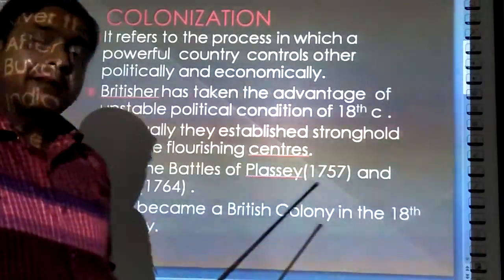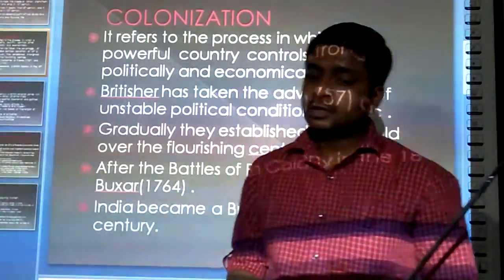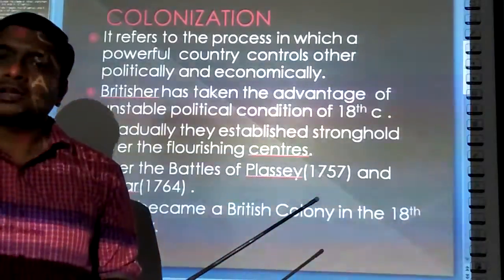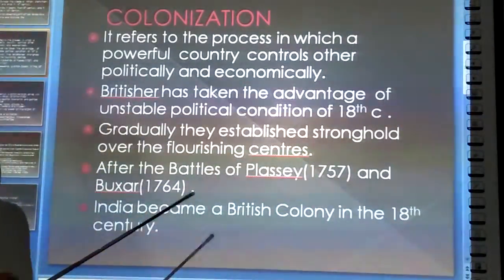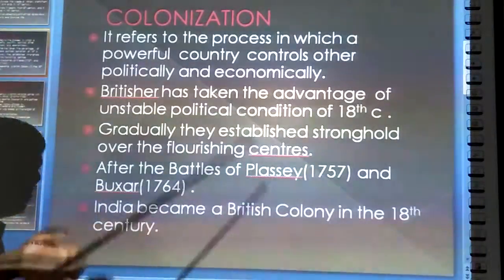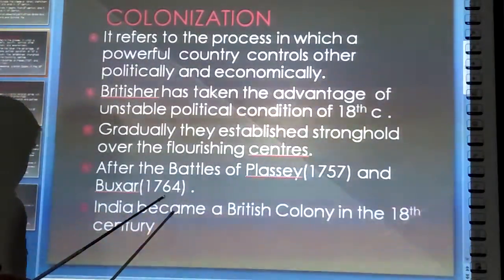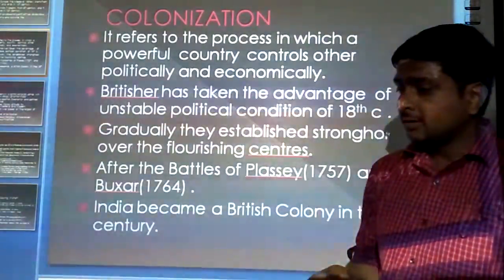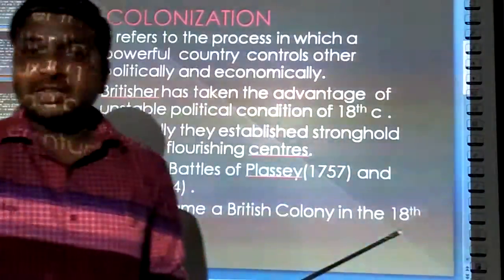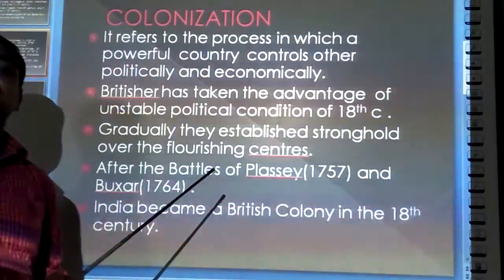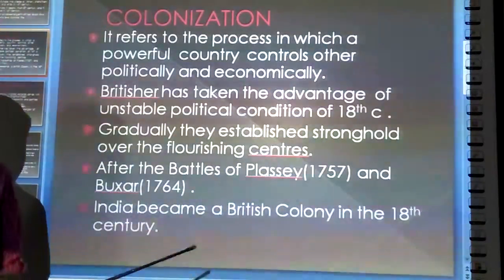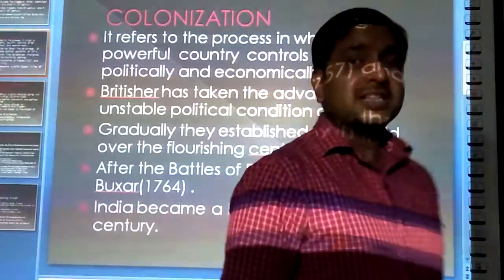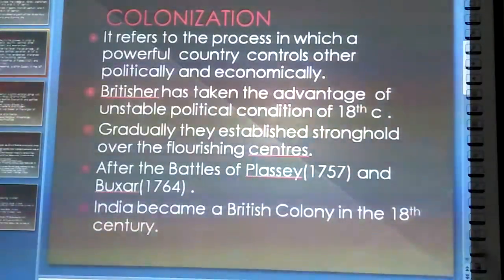As you know, after the death of the Mughal emperor, the political condition of the country was totally unstable. There was no strong ruler who could have a stronghold over the political and social life of India. During this period, the British came to our country with the initial purpose of trading. But when they found complete instability in the country, they started to take a stronghold, trick the country, and slowly and gradually they started to spread their influence in the social and economic scenario of our country.